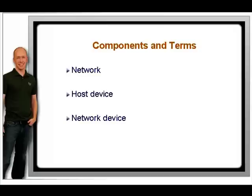Cables can be copper, fiber optic, or even wireless radio, which isn't really a cable but serves the same purpose. The applications used on a network include those that enable network connectivity such as TCP/IP, those that test network links such as ICMP (Internet Control Message Protocol), and end-user applications such as email and FTP. There are thousands of networkable applications; we are concerned with a small number of them.